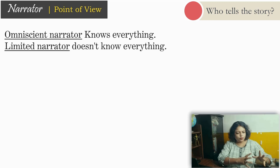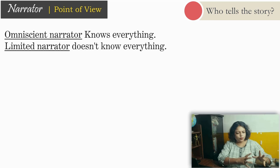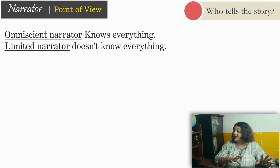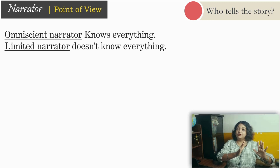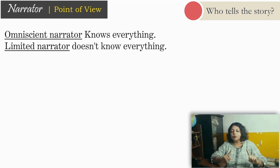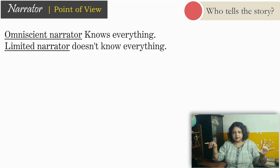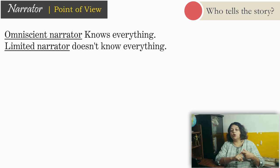Does the narrator know everything — and does he then choose what to tell us and what not? Sometimes yes, sometimes no. Depending on whether the narrator knows everything or not, we have two kinds of narrators or two kinds of point of view through which a story is told. One is omniscient and one is non-omniscient, or limited. This is the first categorization: omniscient narrator and non-omniscient narrator.